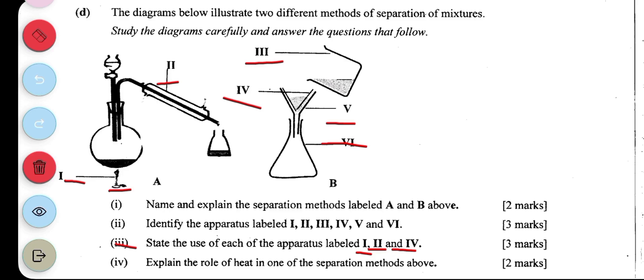II, the condenser, helps to change the vapor to liquid during distillation. IV is used to separate the solid particles from the liquid in the beaker.